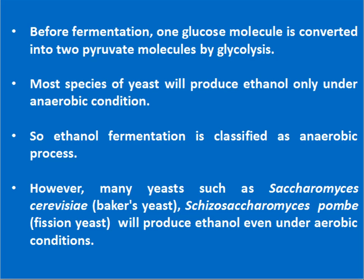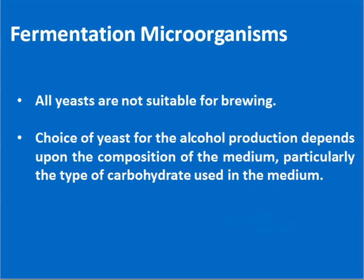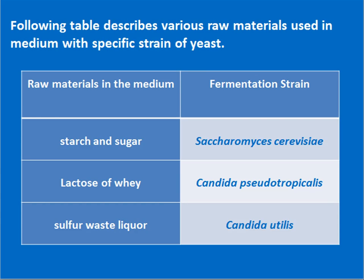However, many yeasts such as Saccharomyces cerevisiae as well as Schizosaccharomyces pombe will produce ethanol even under aerobic conditions. To establish a fermentation industry, our first necessity is a fermentation strain. As fermentation microorganisms, not all yeasts are suitable. Choice of yeast for alcohol production depends upon the composition of the medium, particularly the type of carbohydrate used. Here, one table is given which shows various raw materials used in the medium with specific strains of yeast.